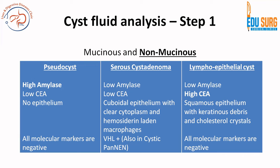When it comes to serous cystic neoplasm, the term itself says it is serous. Serous things have clear cytoplasm. When you do cytology, we know that the cell of origin of serous cystic neoplasm is the centroacinar cell, which is squamous to low cuboidal. You will have similar epithelium with clear cytoplasm and hemosiderin-laden macrophages. There will be no mucin, low CEA, and low amylase because there is no ductal communication of serous cystic neoplasm. The molecular marker you can see is only if VHL is mutated, and it can also be seen in cystic pancreatic neuroendocrine neoplasm. So VHL mutation in cystic lesions can be in two tumors: serous cystadenoma or cystic pancreatic neuroendocrine neoplasm.